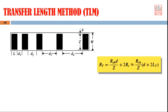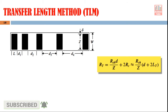Now if we talk about the resistance between the contacts, it is given by this equation. RT is the total resistance between any pair of contacts. The first part is the sheet resistance multiplied by D (the gap between the contacts) divided by Z (the width of the contact) — this represents the resistance offered by the semiconductor between the two contacts. The term 2Rc is the component contributed by contact resistance: one Rc from each of the two contacts used in every measurement.